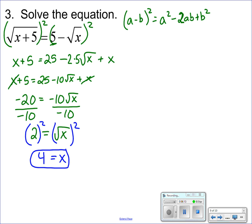Again, check your answers. I have √(4+5), does that equal 5 - √4? √9 is 3, 5 - 2 is 3. 3 equals 3, so that works.